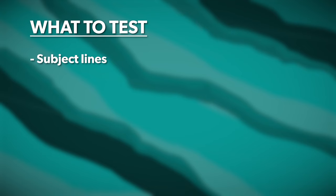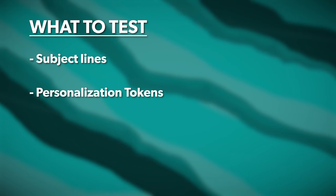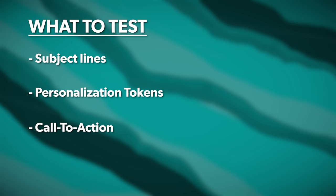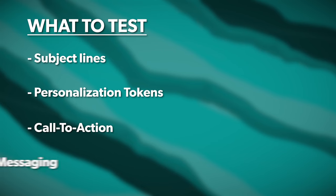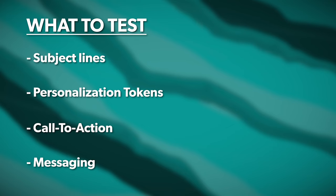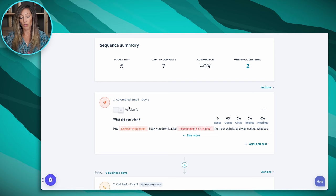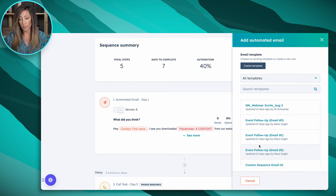There are about four things you can test: subject lines, personalization tokens, the call to action in those specific sequences, and the last one is whether you have specific body copy or the way that you write that message. So it really comes down to the messaging. Here in this version, we're going to click on 'A-B Test' to show you how to create the A-B test.